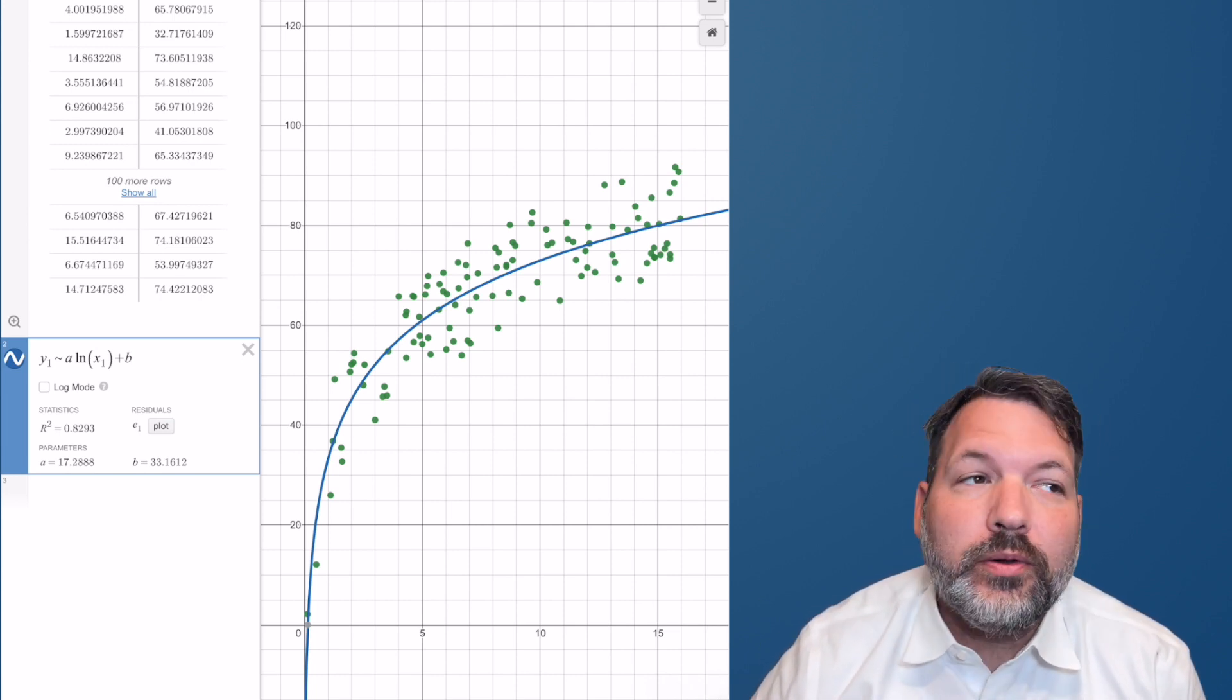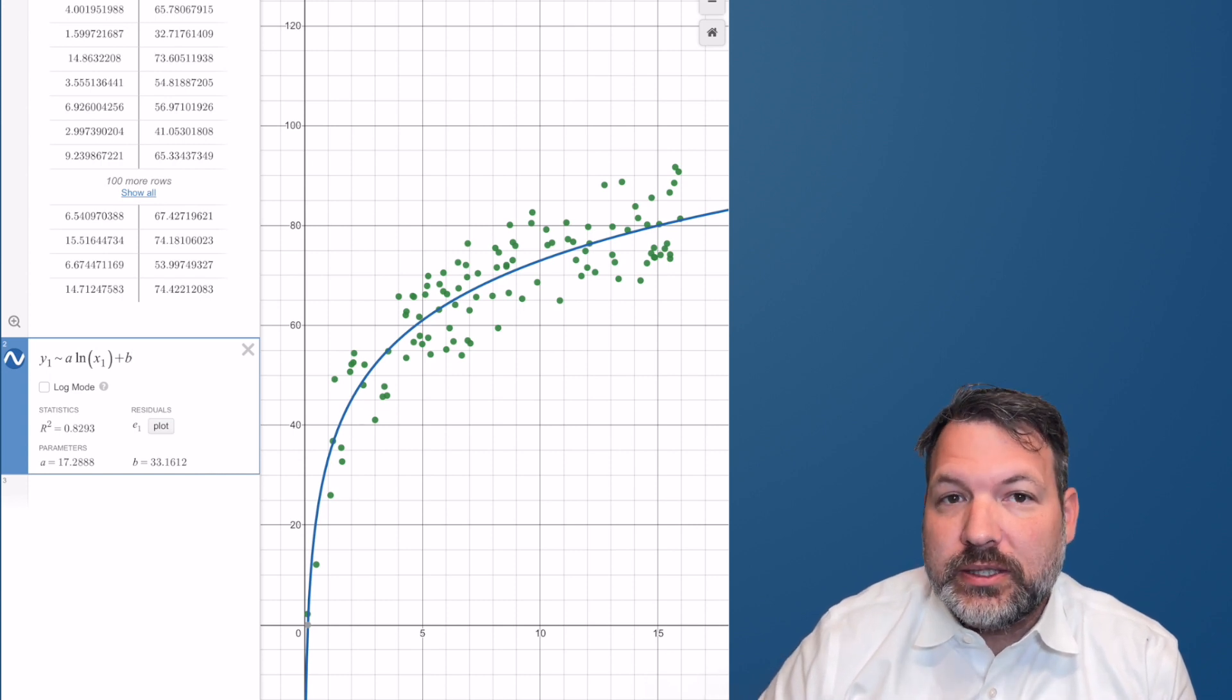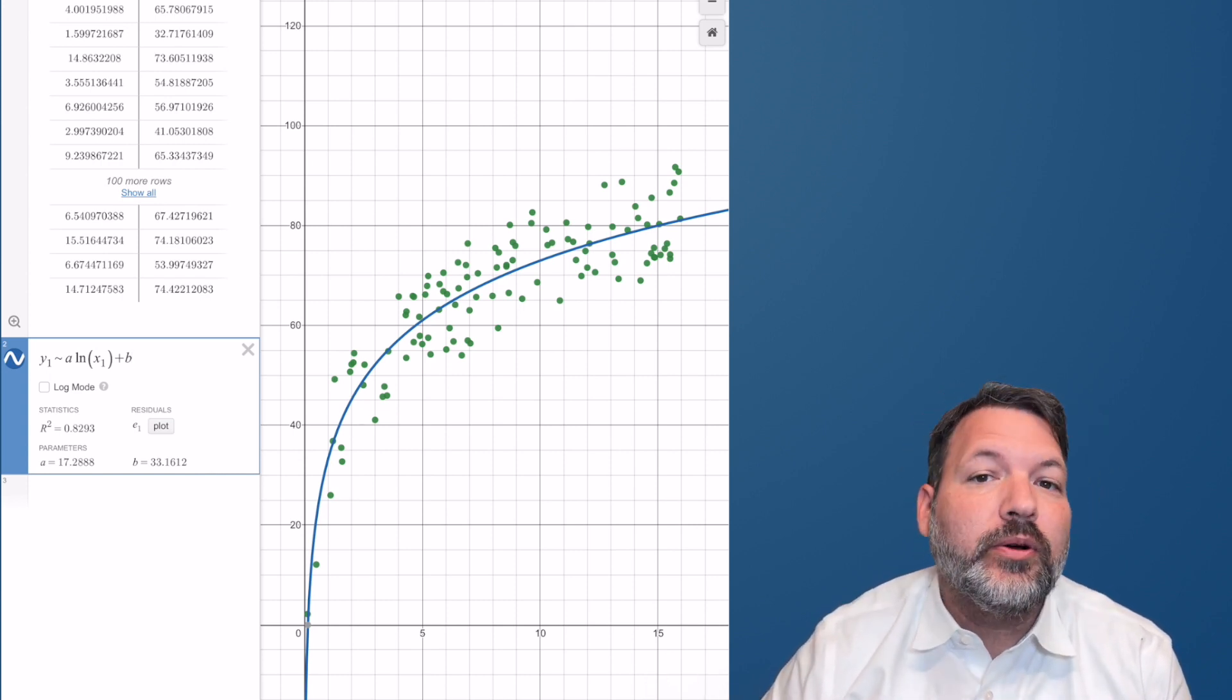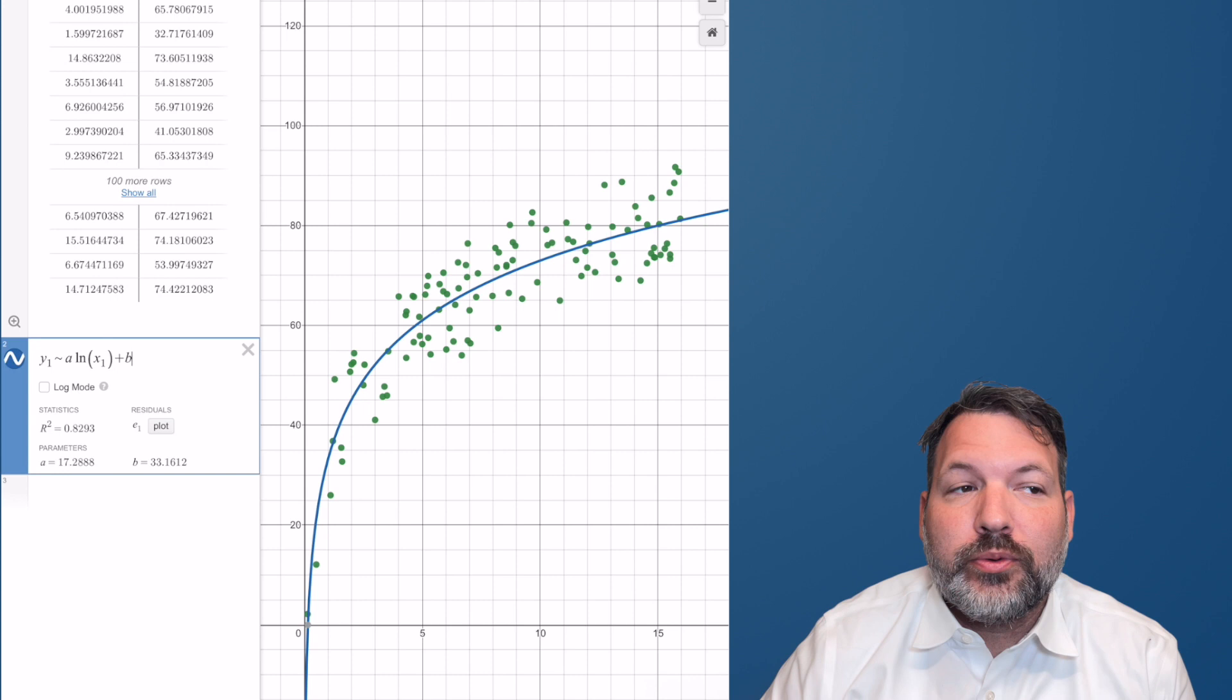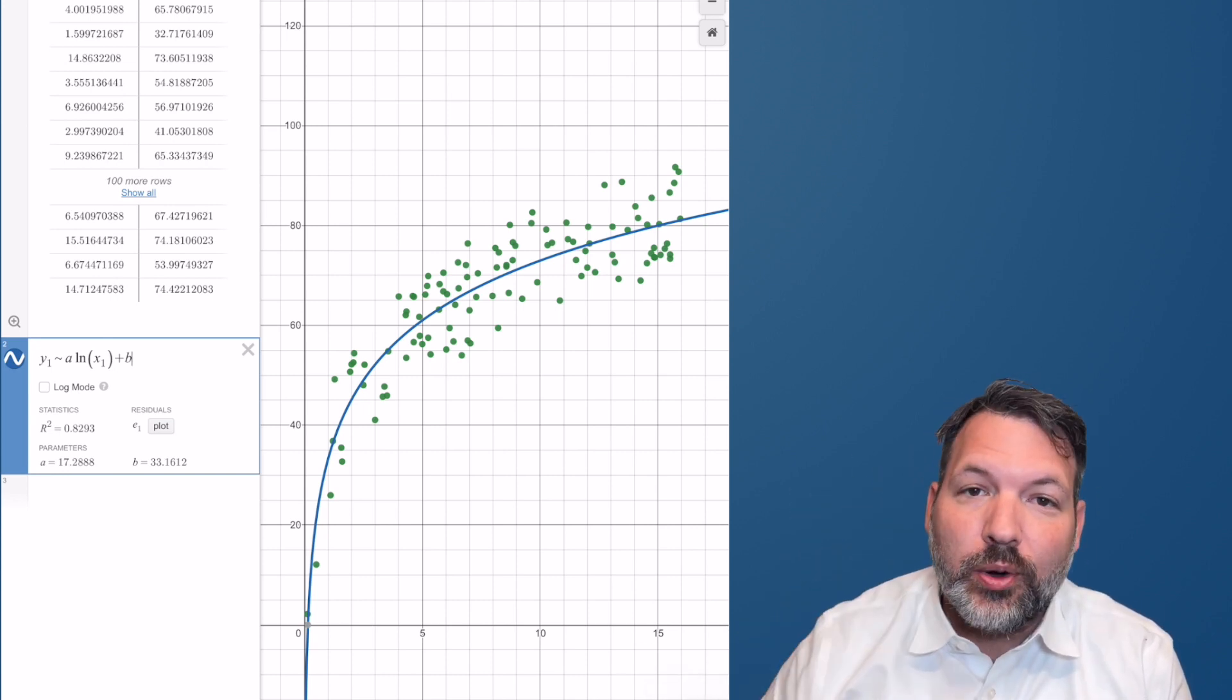So a dog that's one year old, well, the logarithm of one is zero. Zero times 17 is zero. Zero plus 33 is 33. A one-year-old dog is about 33 human years old.